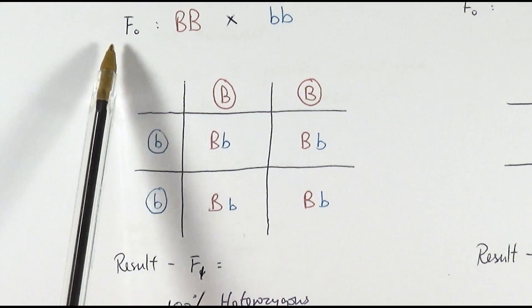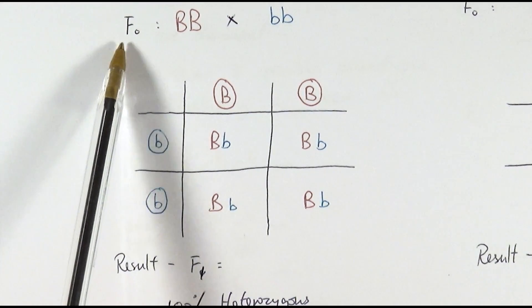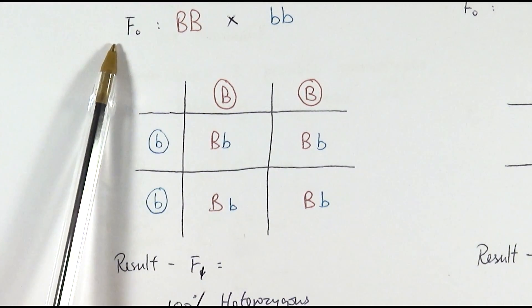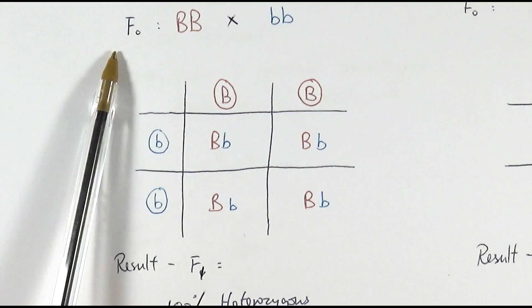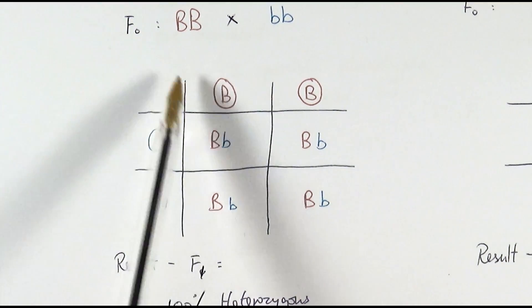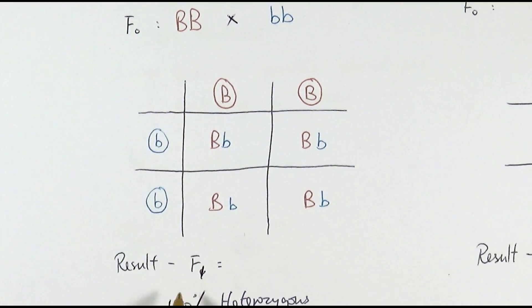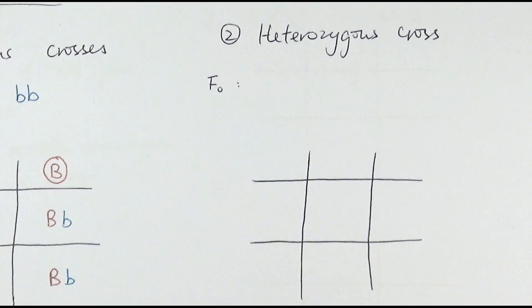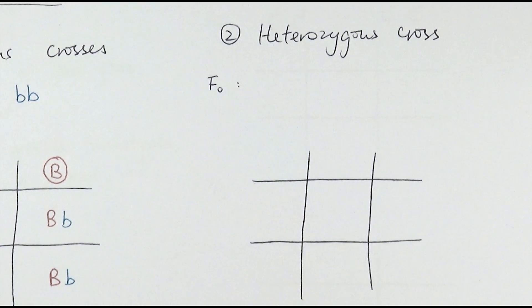You can see here we have F0, which is the original generation, and then the results of that would be F1, which is the generation after that. On the other hand, we can have another type called the heterozygous cross.